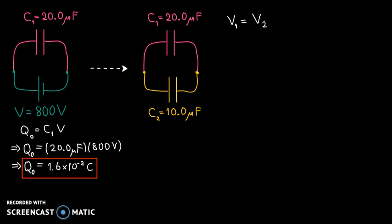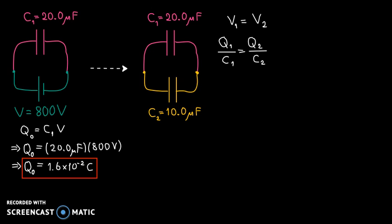Let's start by stating that V1 is equal to V2. Using the capacitance definition formula, we can substitute V equals Q divided by C for each potential value. So V1 is the same as Q1 divided by C1, where Q1 is the new charge on the first capacitor. That equals Q2 divided by C2. This equation has two unknowns, so we can't solve it yet, but we can use it to find the relationship between Q1 and Q2 since we know the values for each capacitance.